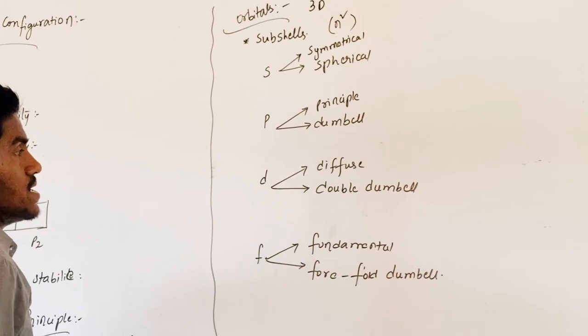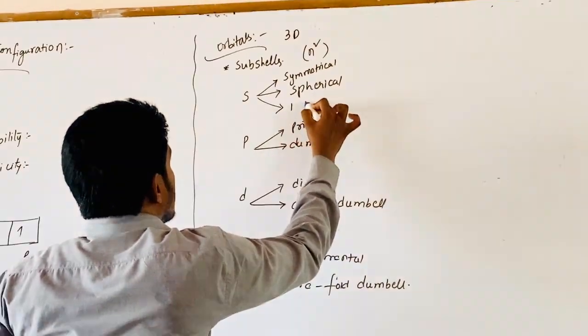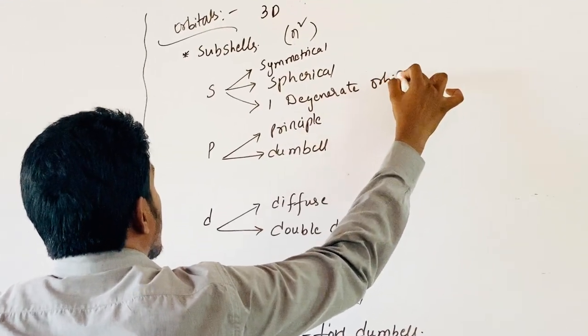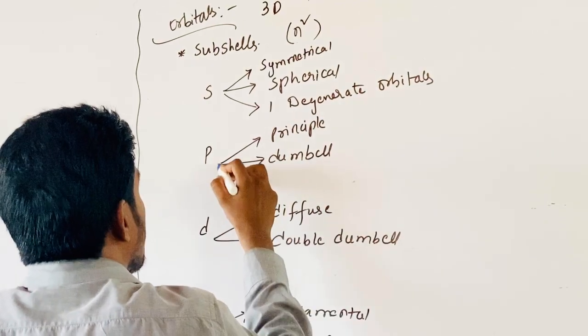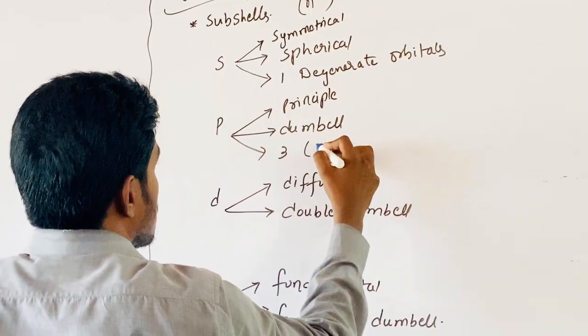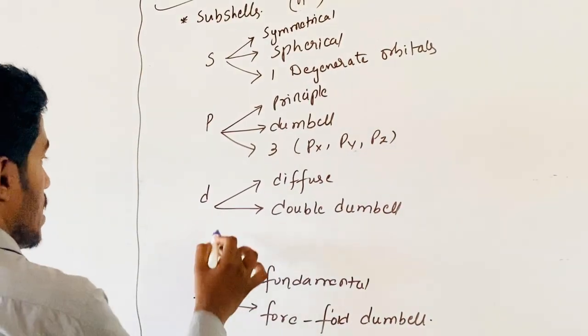Coming to the number of orbitals. S-orbital can have only one orbital, S itself. P-orbital, totally three orbitals: Px, Py, Pz.